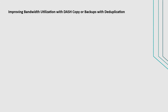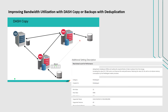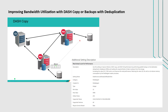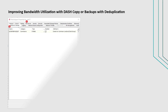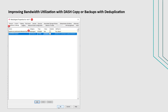The next topic to discuss is improving bandwidth utilization with dash copy or backups with deduplication. If the network utilization during dash copy or backups with deduplication is low, you can improve the dash copy efficiency by performing more signature lookups on the destination DDB, by setting the number of read-ahead links for deduplication. Apply the additional setting 'data move look-ahead link reader slots' on all destination media agents associated with the storage policy copy. This setting increases the number of signature lookups in the destination DDB.